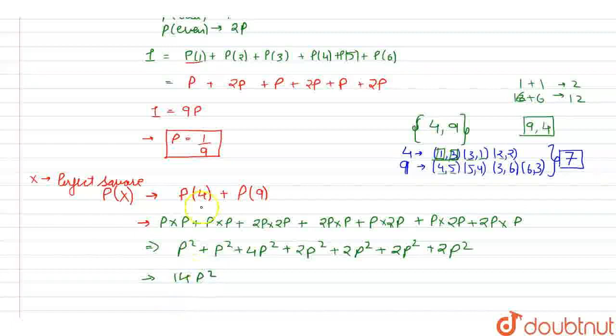Now the value of p was 1 upon 9. If we substitute the value, our final answer will come out to be 14 divided by 9 into 9, that is 14 divided by 81. This is our probability that the sum of the numbers appearing on dice will be a perfect square, that is 4 or 9. Thank you.